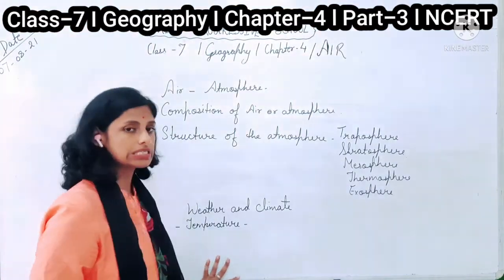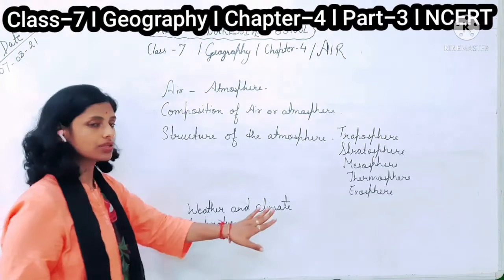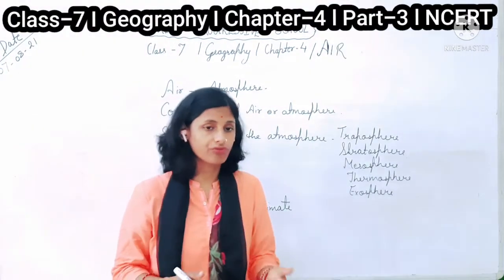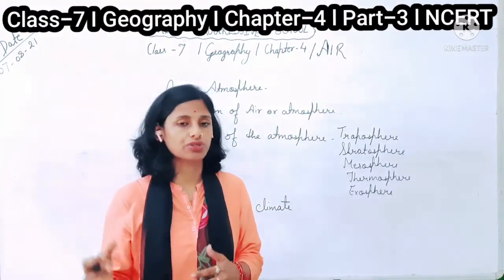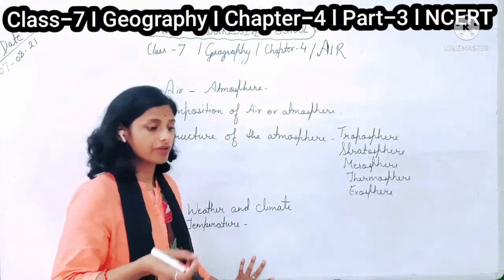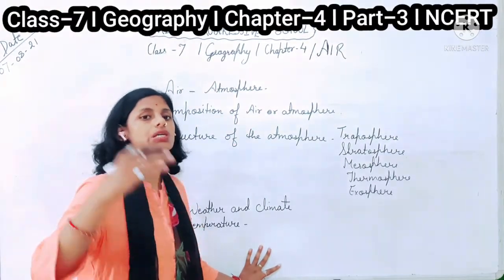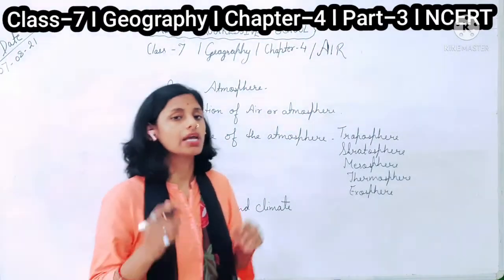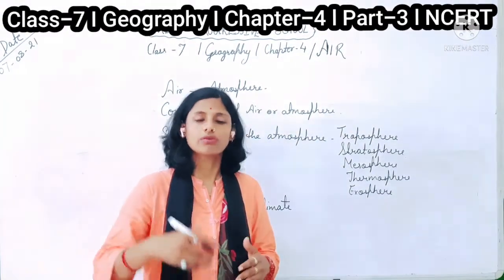We have discussed the elements of weather and climate one by one. Temperature is one such element — the temperature keeps changing. During the day the temperature is different and during the night it is different. The insolation of a place affects temperature: if the amount of insolation decreases, temperature also decreases; when insolation increases, temperature also increases. That's why in the tropical zone the insolation is high compared to the polar zone.